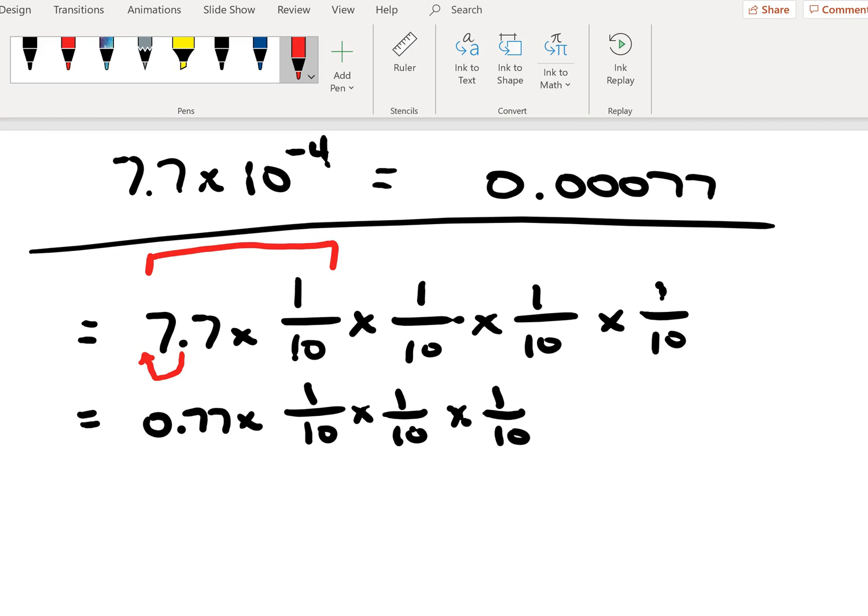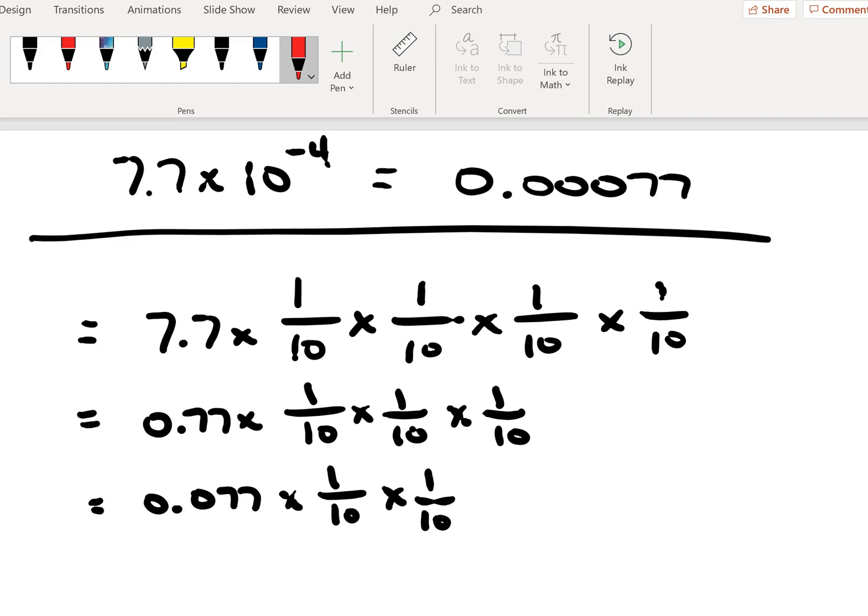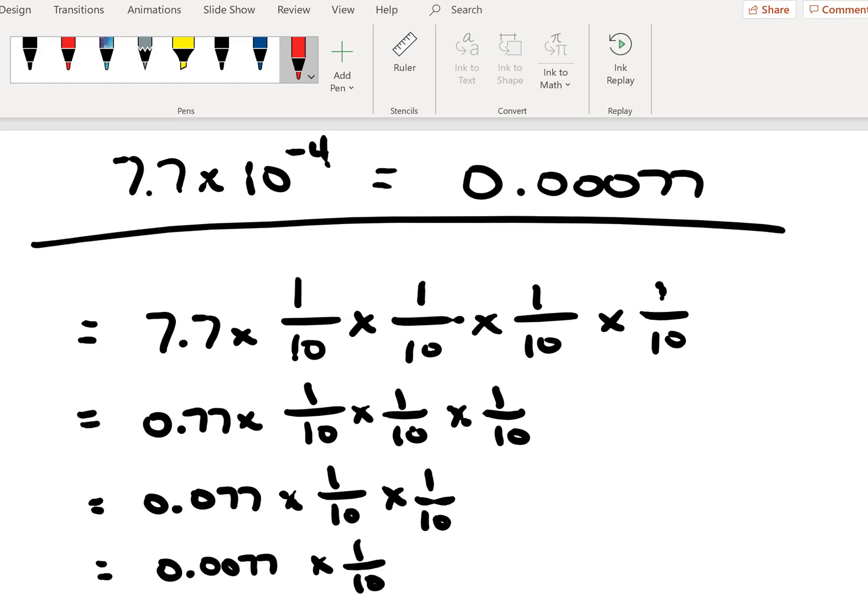And when we do this successively, what we find is that we see that progressive movement one right after the other as we execute the progressive multiplications.